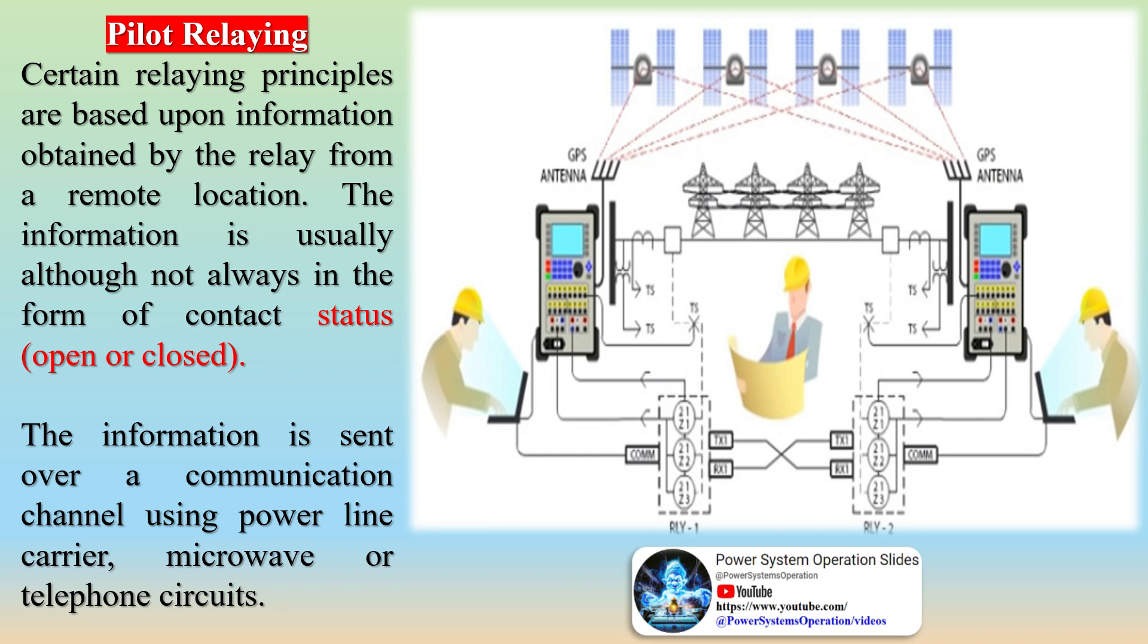Pilot relaying. Certain relaying principles are based upon information obtained by the relay from a remote location. The information is usually, although not always, in the form of contact status, open or closed. The information is sent over a communication channel using power line carrier, microwave, or telephone circuits.